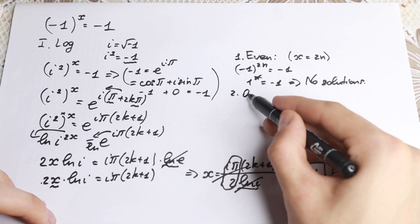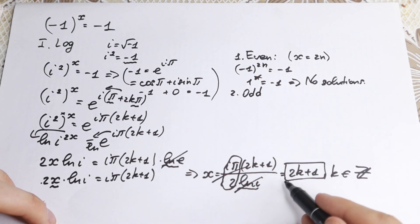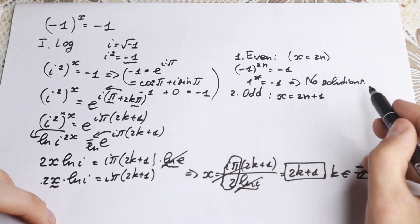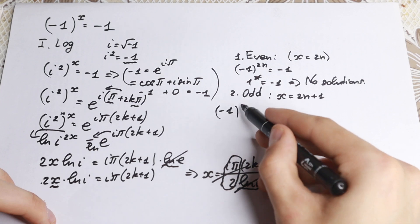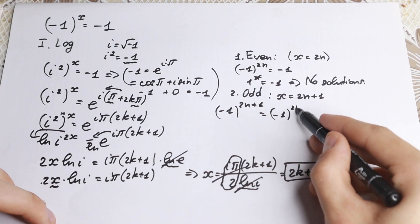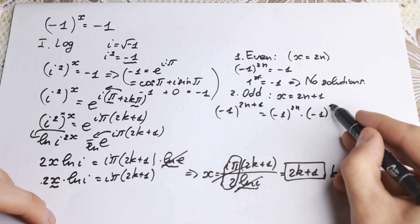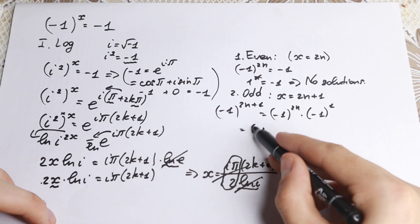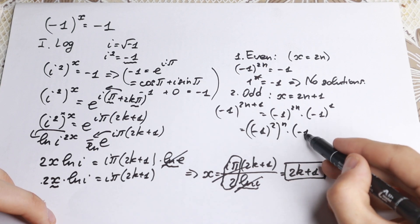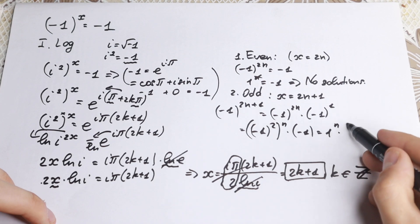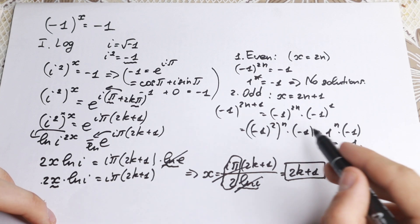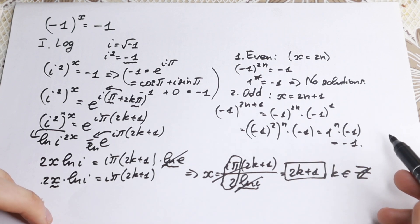Now if x is odd, x equals 2n+1. Then minus one to the power (2n+1) equals minus one to the power 2n times minus one to the power 1. That equals (minus one squared) to the power n times minus one, which equals 1 to the power n times minus one, which equals minus one. So when x is odd, we get a valid solution.